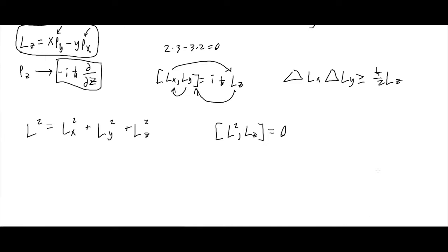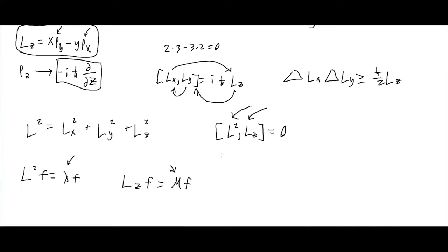Because [L², L_z] = 0, we can write simultaneous eigenvalue equations: L²f = λf and L_z·f = μf. In the next video we'll find that these eigenfunctions f are the spherical harmonics. We can know both eigenvalues λ and μ at the same time since L² and L_z commute.